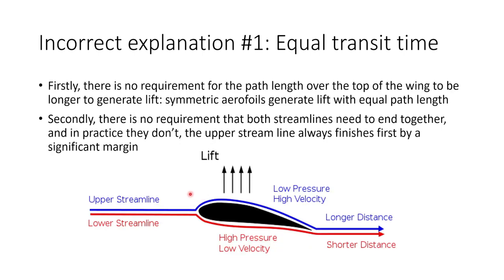The first problem is that there is no requirement for the path length of the air that travels over the top of the wing to be longer than the path along the bottom of the wing in order for lift to be generated. You can make symmetric aerofoils that can generate lift even though they have equal path length. Secondly, there's no requirement that the time for the air to travel over the top and under the wing should be the same. In practice, the air flowing over the top moves very much faster and reaches the trailing edge first by a significant margin. So this equal transit time hypothesis is completely wrong.